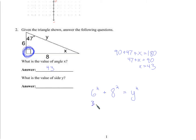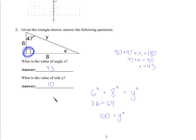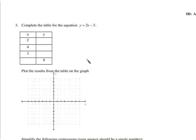6 squared is 36, plus 8 squared is 64. Together that's 100. But don't say that's what y is, because that's what y would be if you squared it. If you square y you get 100, so what is y? It's a number you multiply by itself to get 100 — so that would be 10.